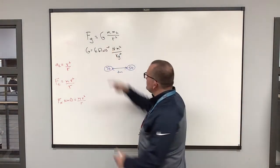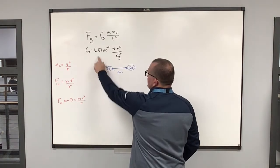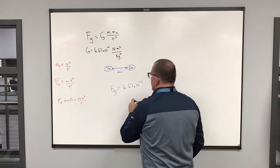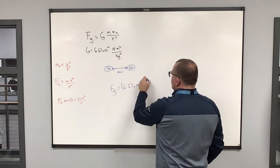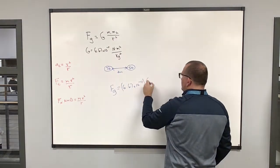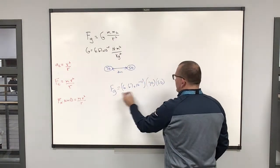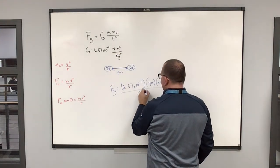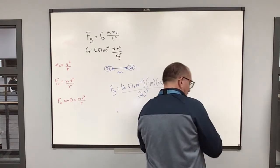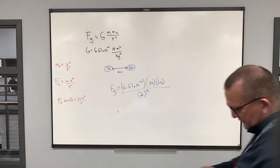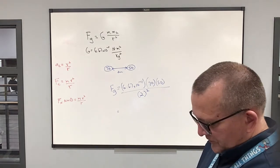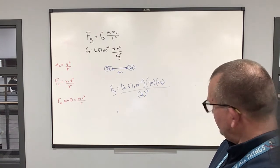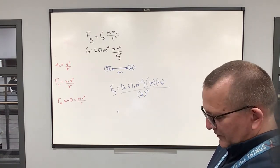So we got our 70 kilogram person here and our 50 kilogram person here. The distance between them we'll say is two meters and we want to find the gravitational force. So we go to the equation, force of gravity is equal to the constant, which is Cavendish's constant, times the two masses. So 70 and 50, they both have to be in kilograms, which they are, divided by the radius squared, which is two meters. So two squared.